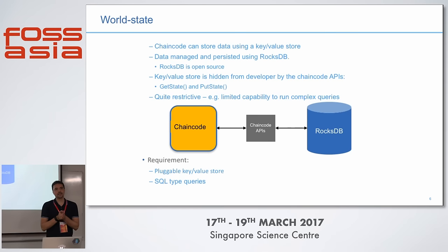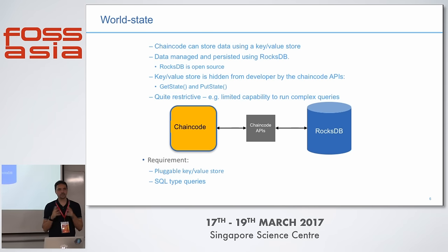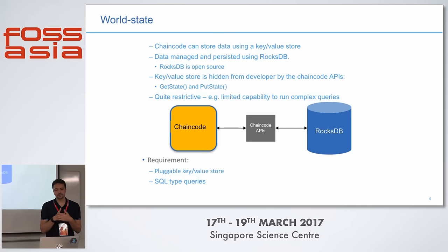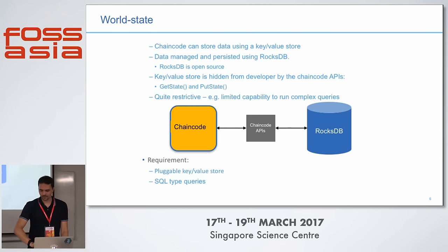Then the world state — in the current version 0.6, the world state is a key-value store implemented on top of RugsDB. It is quite restrictive in terms of queries that you can perform since it's a key-value store. We wanted to have a pluggable key-value store, pluggable storage, and we want to perform SQL-like queries in order to do more interesting analysis of the data.